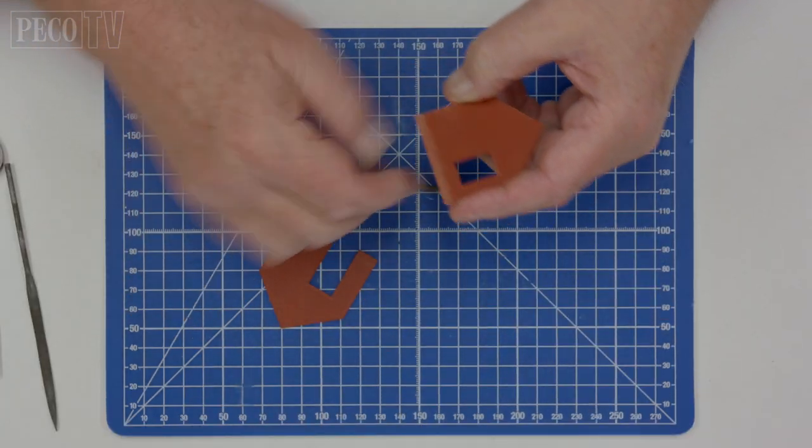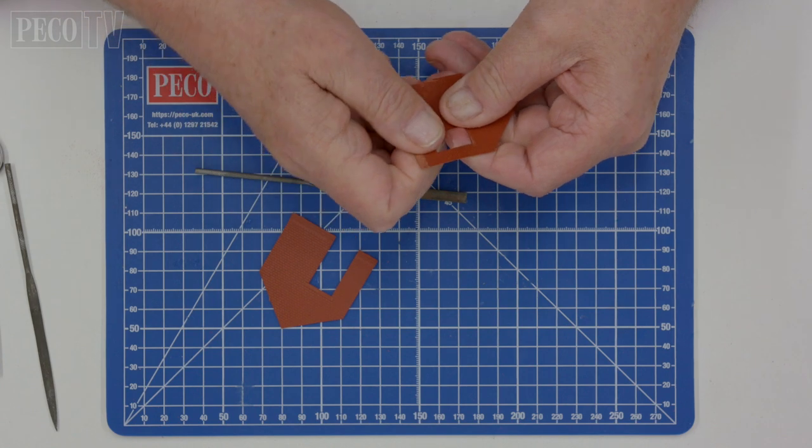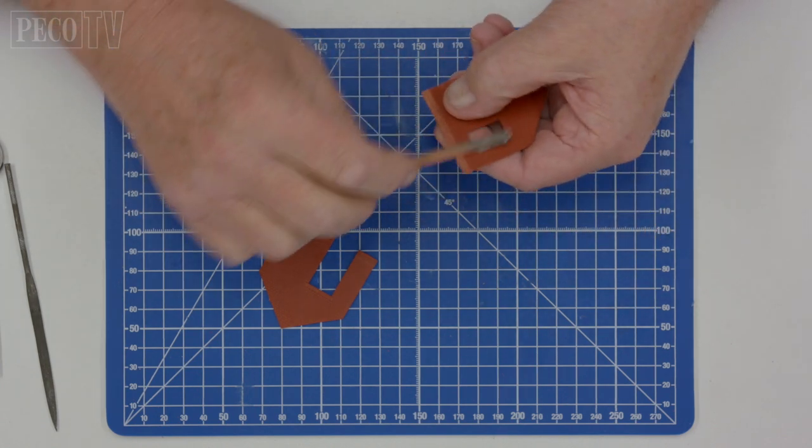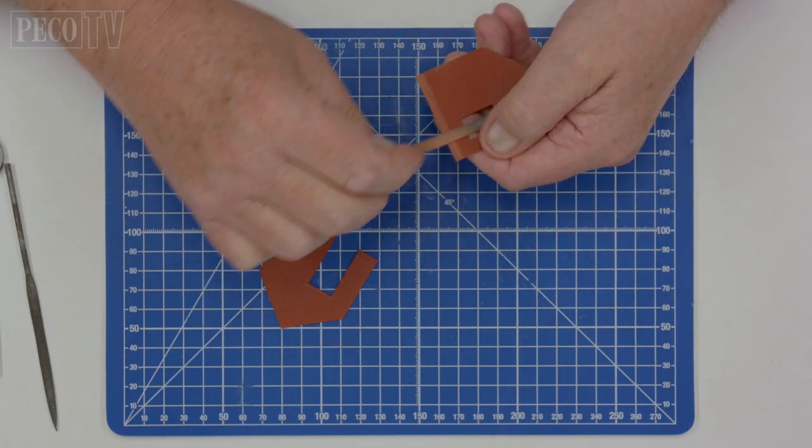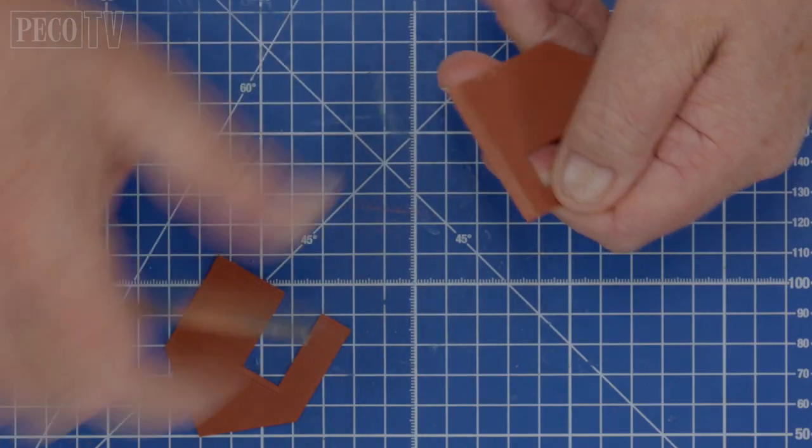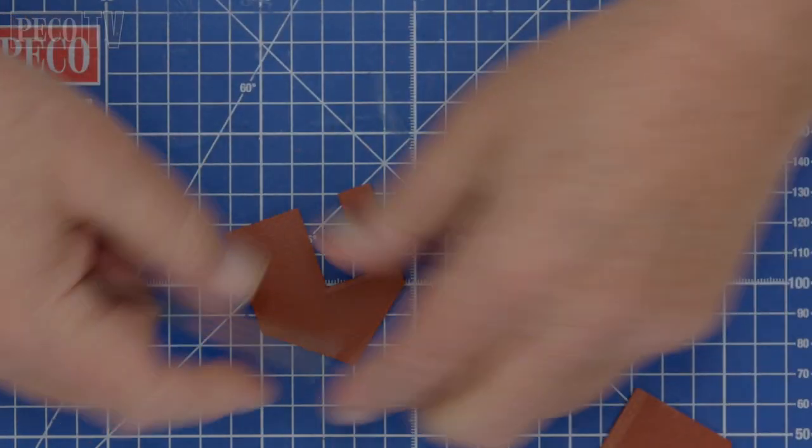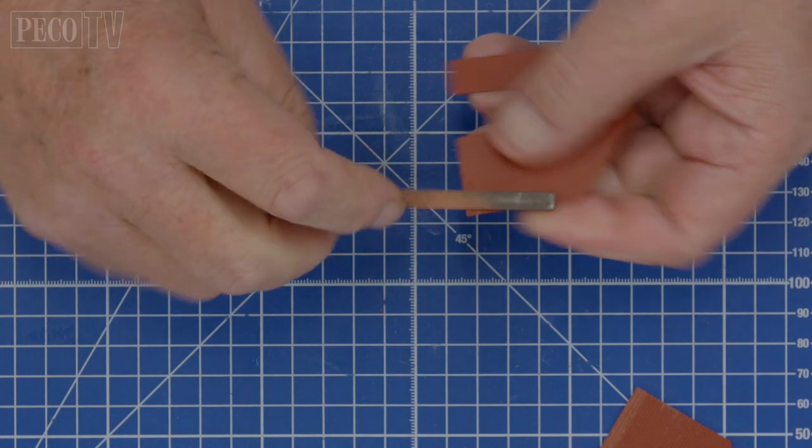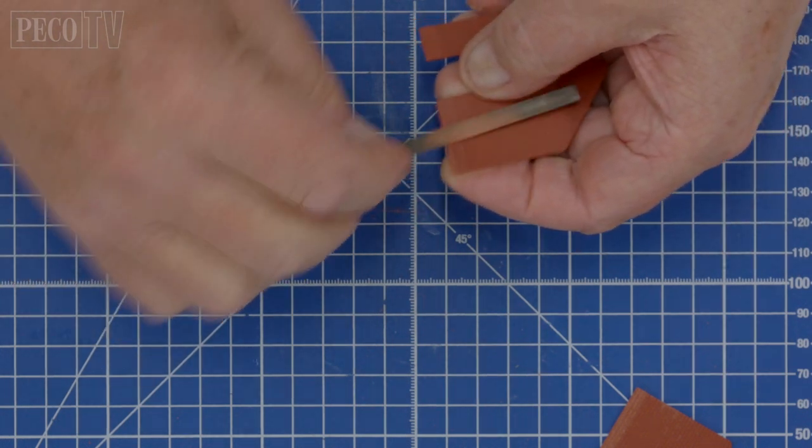Now you know where the two end walls of the station building marry up with the station house buildings. You will need to file away the set off at the bottom of each facing wall as shown here. It's important to do this to get a snug fit.